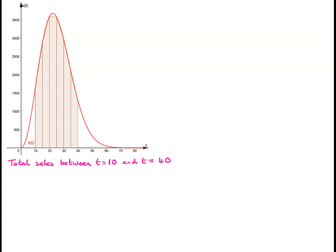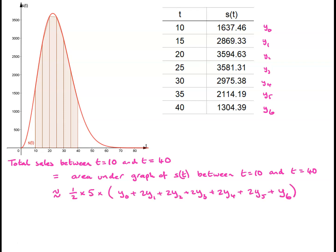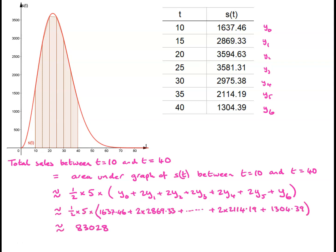There is the graph of s(t), and we want the area underneath between t = 10 and t = 40, with the trapezoids shown. The table gives values y₀ through y₆. Using the trapezium rule, the area is approximately ½ × 5 × (y₀ + 2y₁ + 2y₂ + 2y₃ + 2y₄ + 2y₅ + y₆), which gives a value of 83,028.